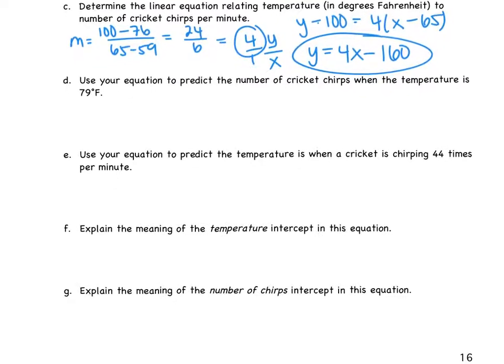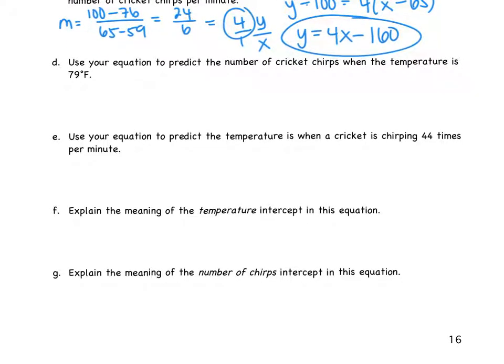Okay, so we're going to go on. D, use your equation to predict the number of cricket chirps when the temperature is 79 degrees. That's 79 degrees. What is that? X. So it's asking you to find X, find Y rather, when X is 79. So using that equation above, we're going to do 4 times 79, subtract 160. I don't know what 4 times 79 is. 316. So we get 156. I will not accept an answer of 156.